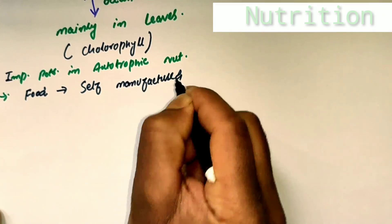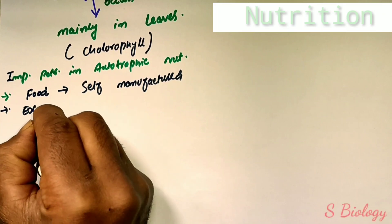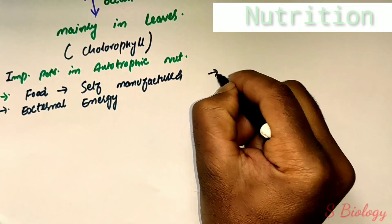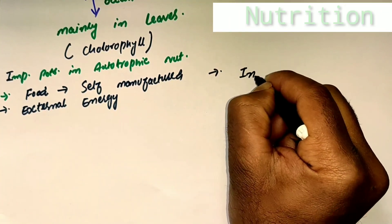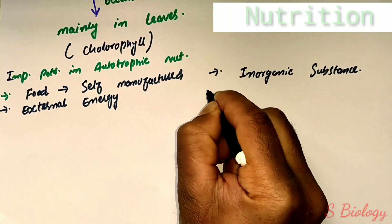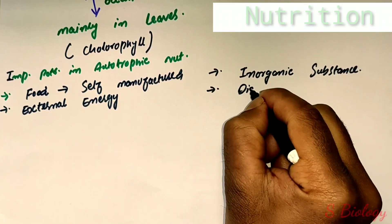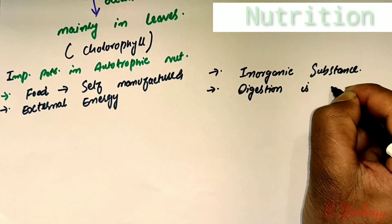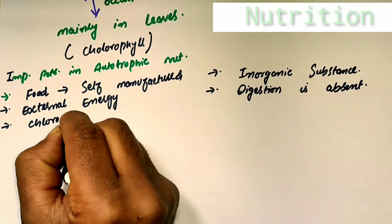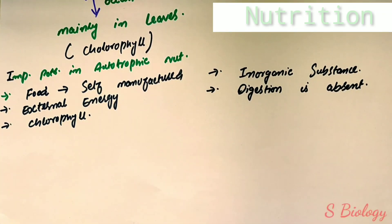Key features of autotrophic nutrition: number one, food is self-manufactured by the help of photosynthesis and light. Number two, an external source of energy is required for synthesis of food. Number three, inorganic substances constitute the raw materials for manufacturing food. Number four, digestion is absent in autotrophic mode of nutrition. Chlorophyll is present because it traps solar energy for manufacturing their own food. That is why autotrophs are called producers.